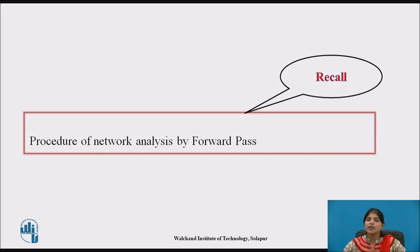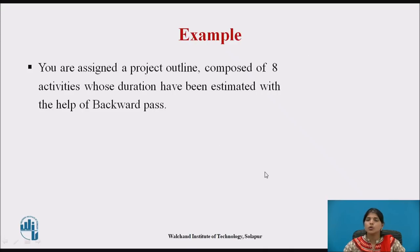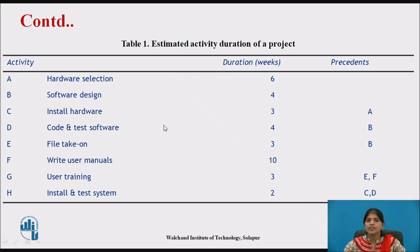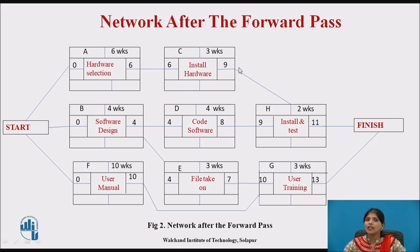Moving towards network analysis by backward pass, recall the procedure of the forward pass. The project consists of eight activities whose durations have been estimated. In the table, these are the activities, descriptions, durations, and precedents. Activities A, B, and F have no precedents, so they start immediately. This is the network after the forward pass.